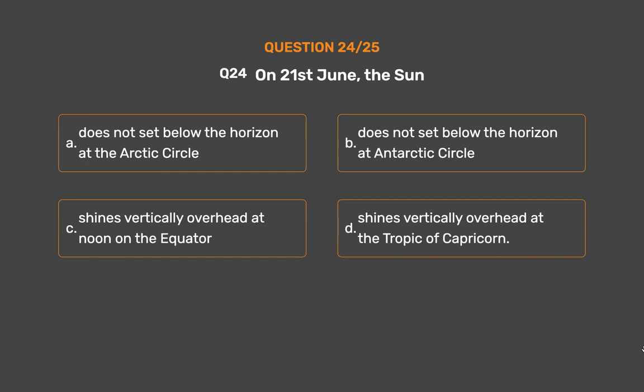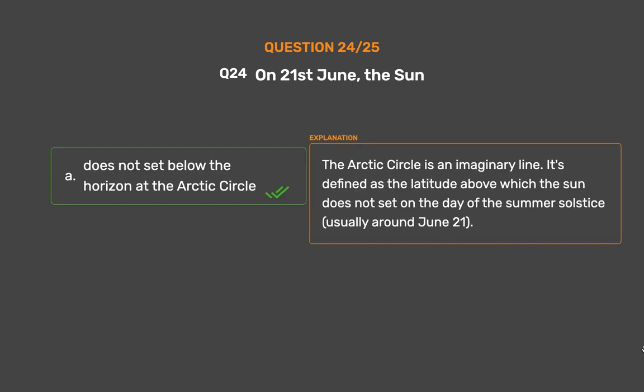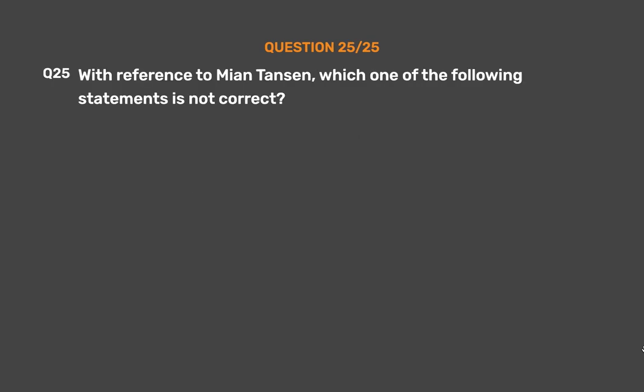The correct answer is Option A: Does not set below the horizon at the Arctic Circle. The Arctic Circle is an imaginary line defined as the latitude above which the Sun does not set on the day of the summer solstice, usually around June 21st.